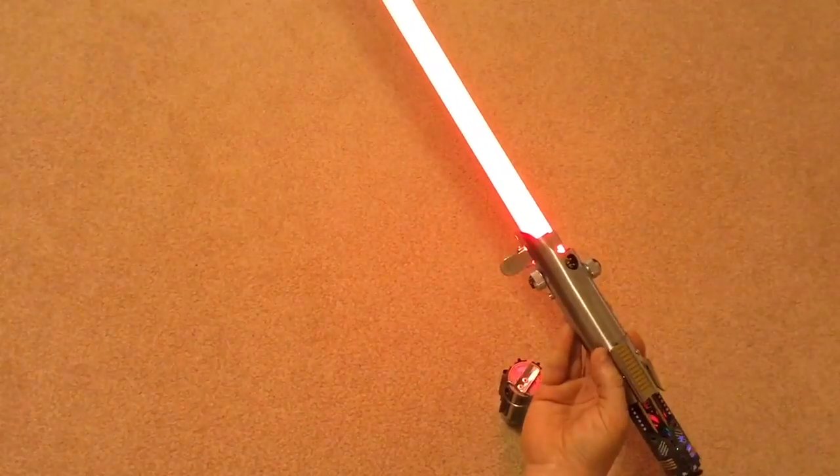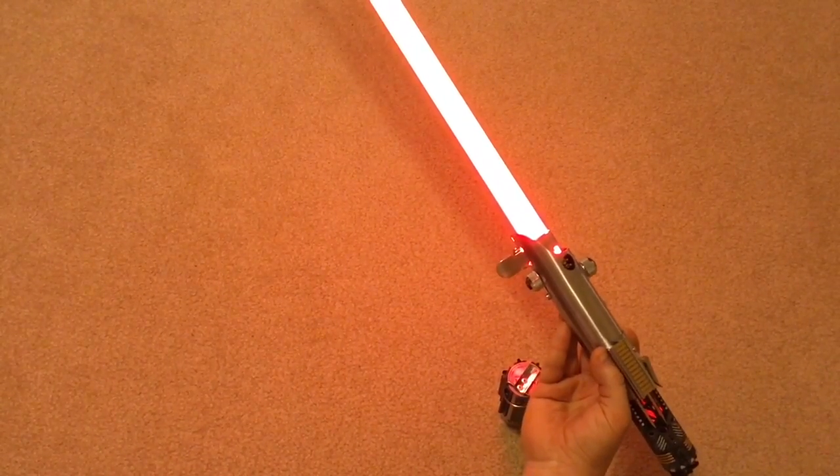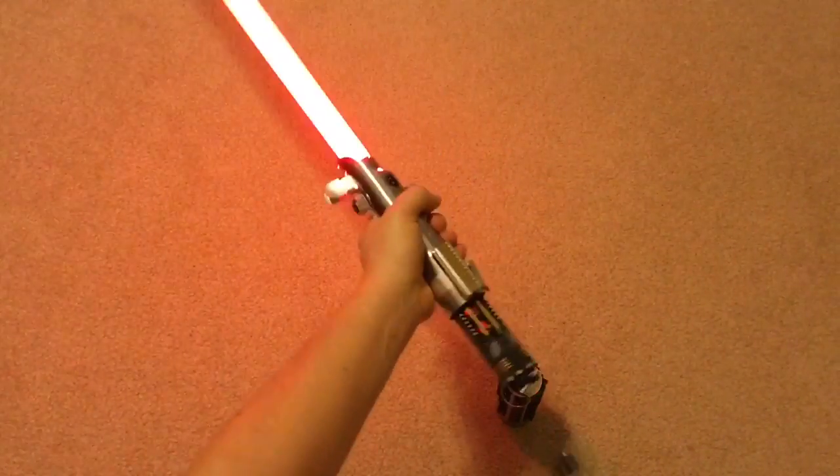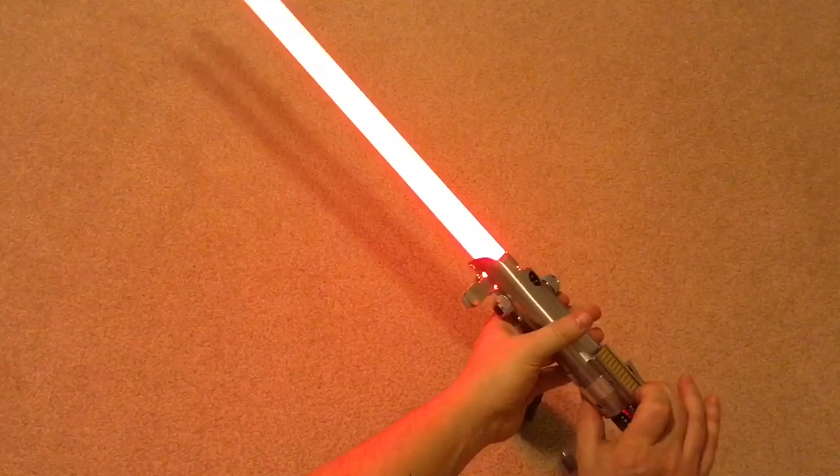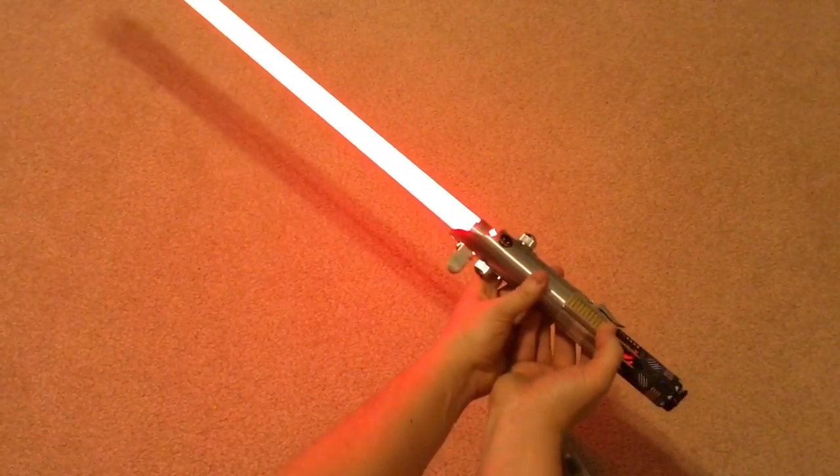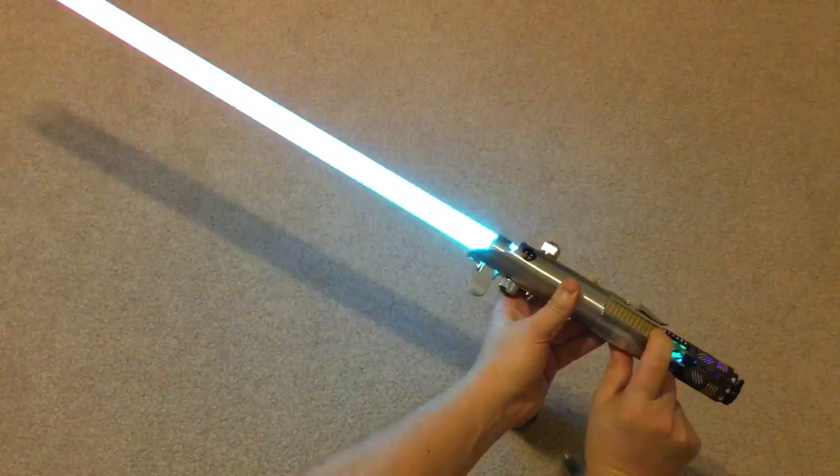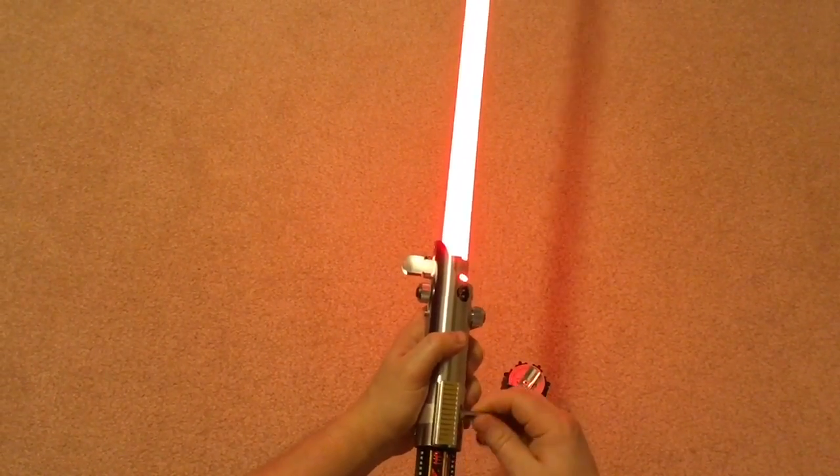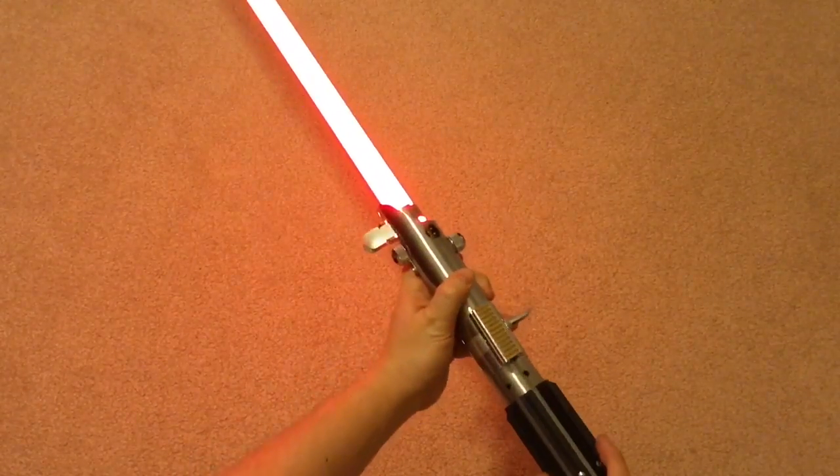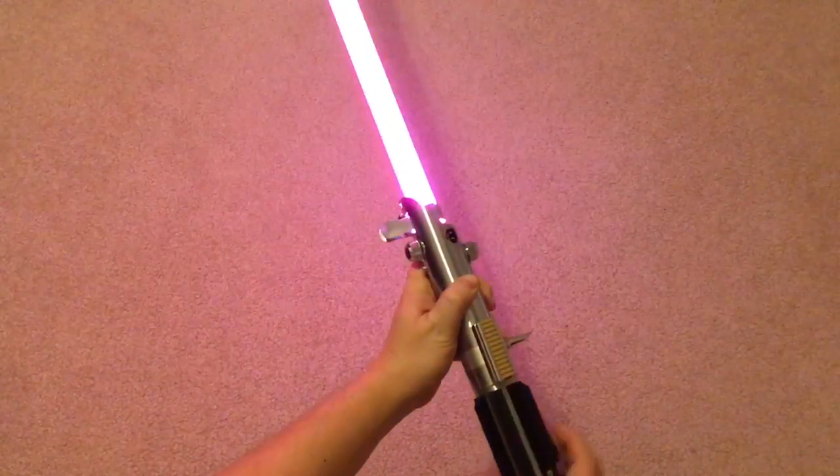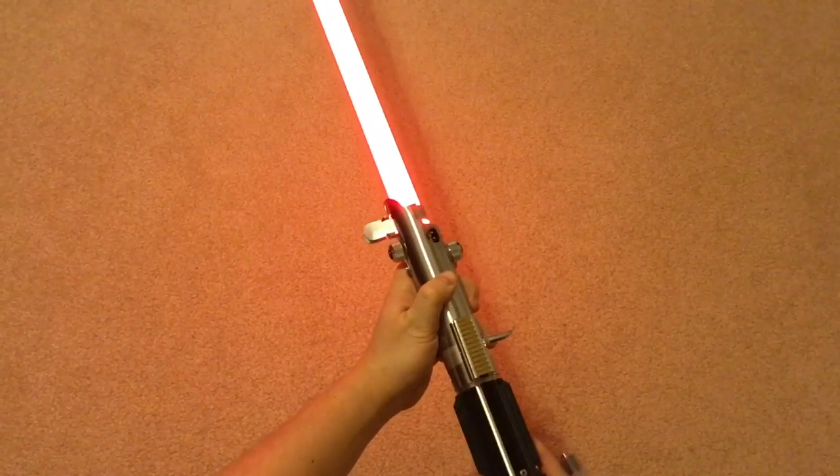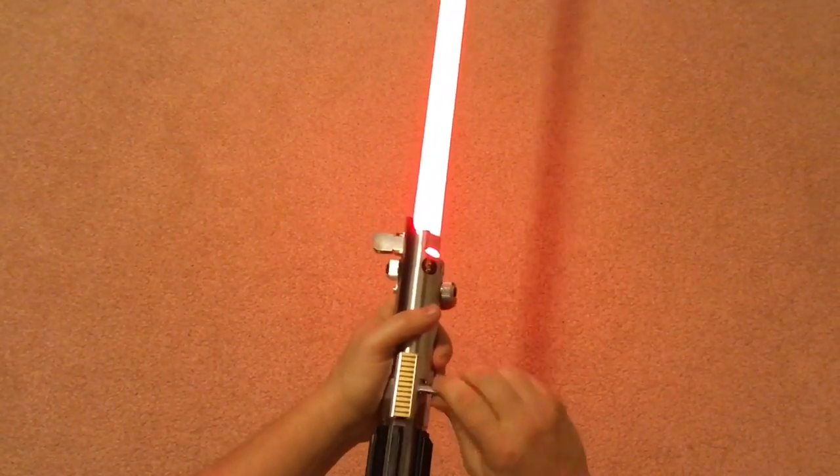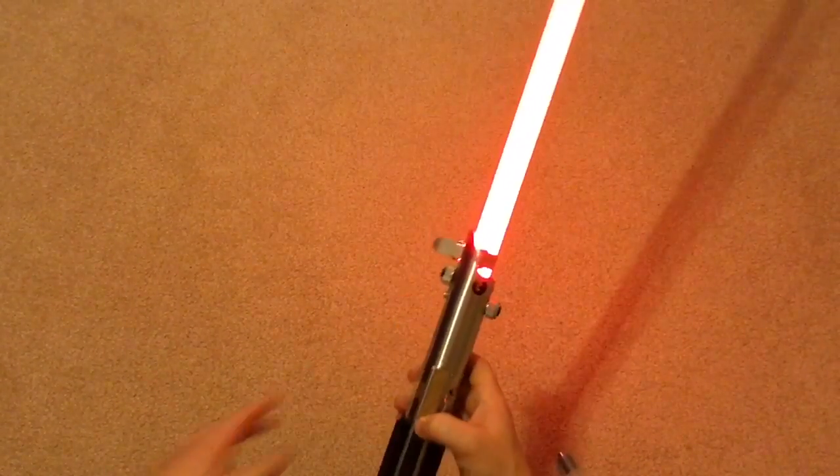And then that switches to the next sound bank, which has a different color. This is a lower hum. Kind of hear that. Blaster deflect. I'll do it so you can see the crystal. I'm actually going to put this back on because it works better that way. There we go.